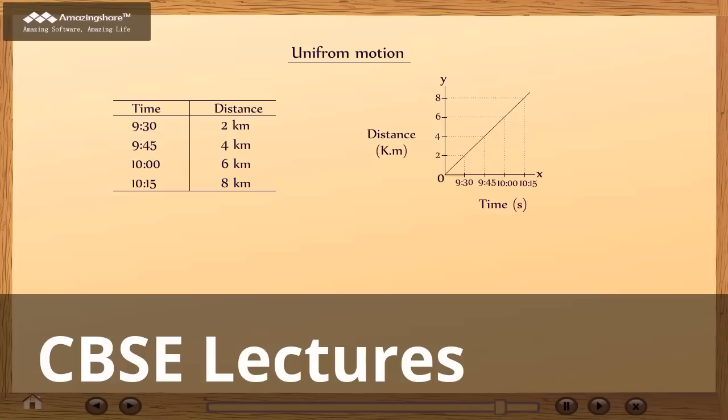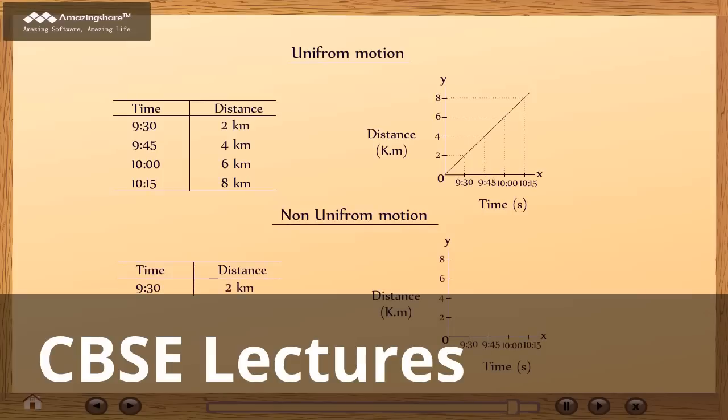Now I will explain you graphical representation of non-uniform motion. If an object moves, it starts its time at 9:30, it covers the distance of 2 km. At 9:45, it covers the distance of 1 km.